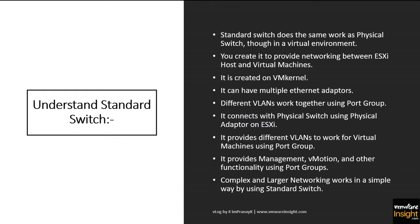The standard switch does the same work as a physical switch, but in a virtual environment. You create it to provide networking between the ESXi host and virtual machines. It is created on the VMkernel, can have multiple Ethernet adapters, supports different VLANs working together using port groups, and connects to physical switches via the physical adapter on ESXi. It provides management, vMotion, and other functionality using port groups, allowing complex and large networking to work in a simple way.